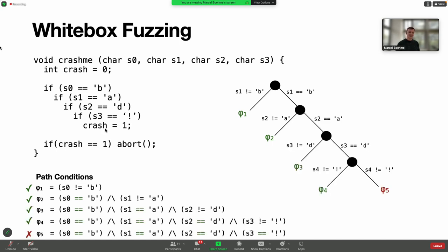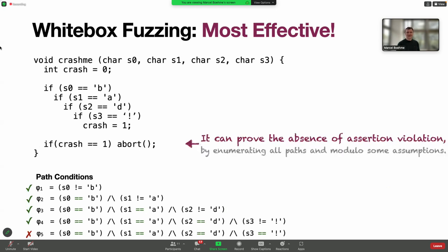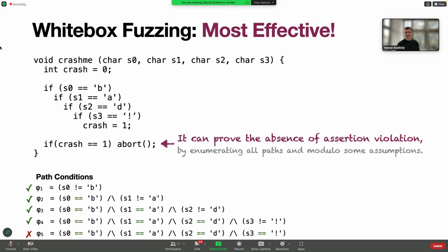We could explore all paths, and after exploring the fifth path, we would see the program crashes. In this sense, white box fuzzing is actually most effective because it can prove the absence of an error, in this case an assertion violation, by enumerating all paths of the program. Of course you're making some assumptions, but in principle we could prove the absence of error.